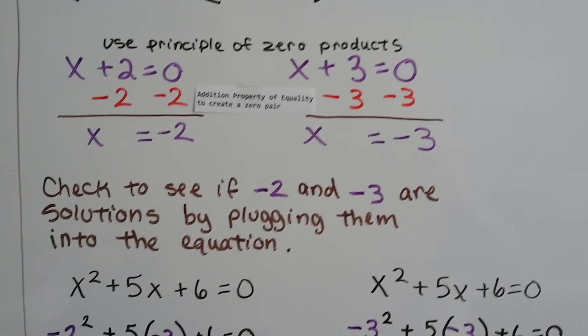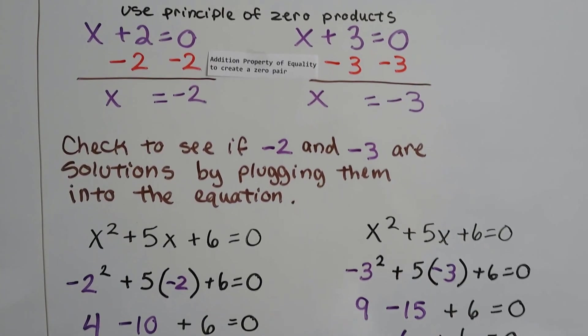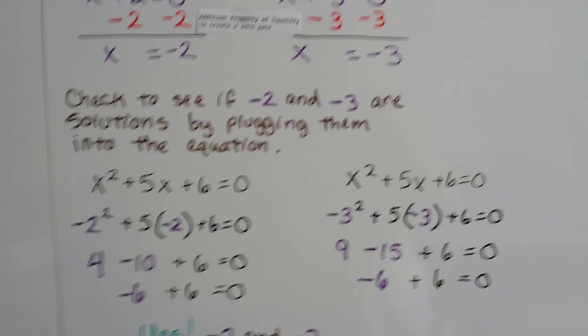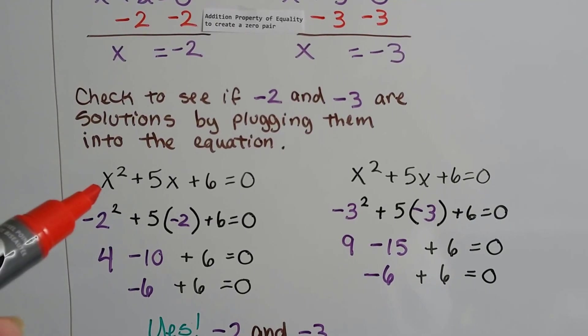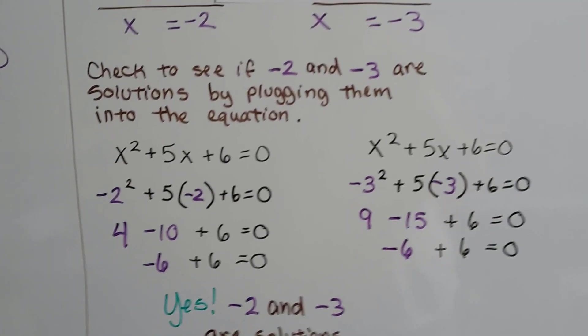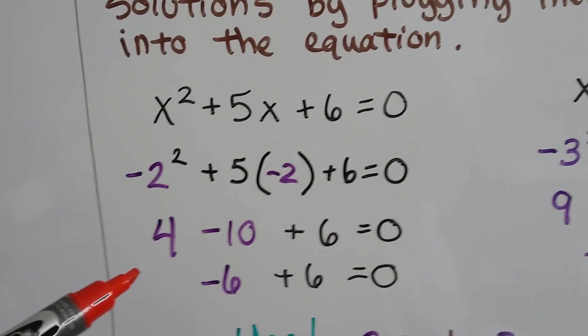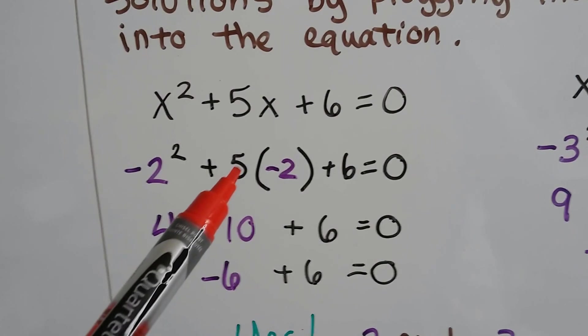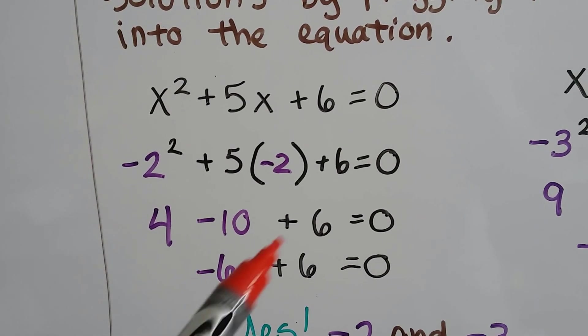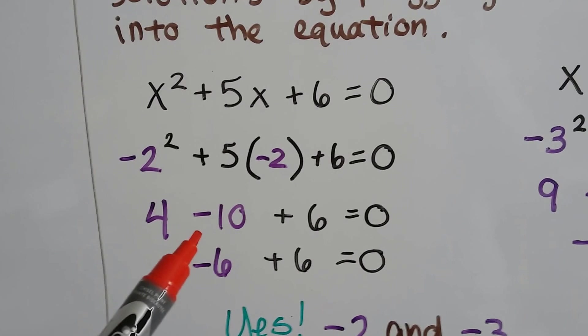Now we check to see if negative 2 and negative 3 are solutions by plugging them into the equation. So everywhere there's an x, we put a negative 2, and let's see what we get. Negative 2 times negative 2 is a positive 4, and then 5 times negative 2 is a negative 10, and we have to add the 6.